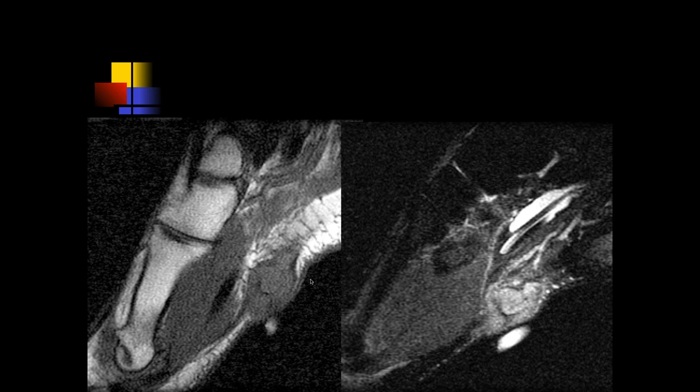Here we can see intermediate T1 and slightly increased STIR signal intensity along the plantar fascia — this is another large plantar fibroma. Sometimes when they get large, people call them fibromatosis — plantar fibromatosis, that's the old term. I really think a lot of these are hyper-exuberant healing due to plantar fascia partial tears, but they keep growing, so that theory is probably only partially true and certainly not in all cases.